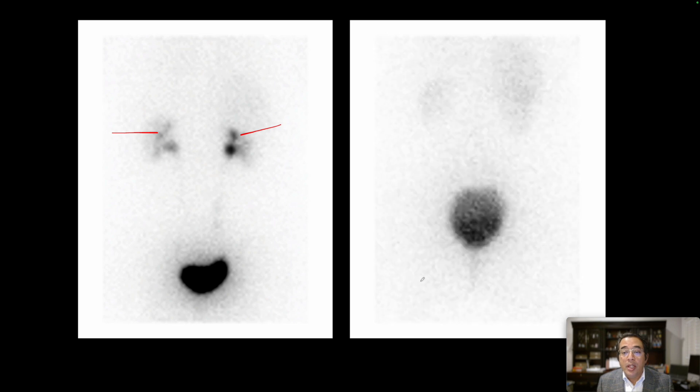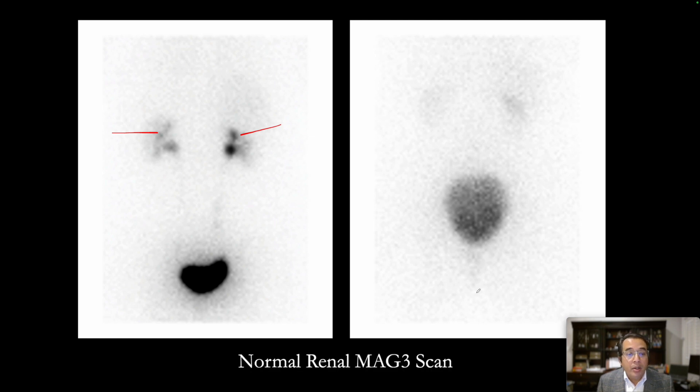And so these are the post-Lasix images showing that after the administration of Lasix, both kidneys are forced to excrete the radiopharmaceutical into the urinary bladder. So this is a normal renal scan using technetium 99M MAG-3.